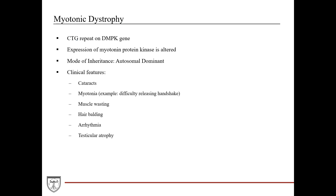Myotonic dystrophy is due to a CTG repeat on the DMPK gene, which alters the expression of myotonin protein kinase. The exact function of this protein is not entirely known, but it is critical for muscle function, which is why it leads to this form of muscular dystrophy. We'll discuss it in more detail in chapter 43 on muscular dystrophy. Mode of inheritance is autosomal dominant. Clinical features include cataracts, myotonia — a hallmark being difficulty releasing a handshake — muscle wasting, hair balding, arrhythmia, and testicular atrophy.